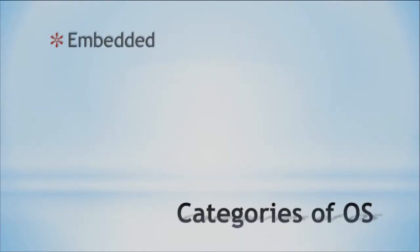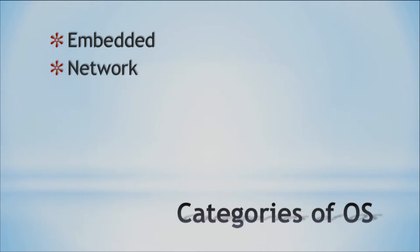There are different types of operating systems that we use and interact with. We're going to look at three different categories: the embedded operating system, the network operating system, and the standalone operating system.